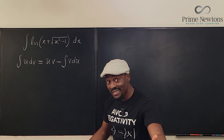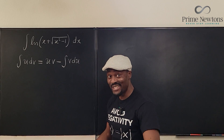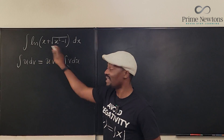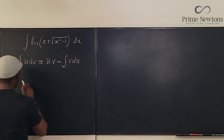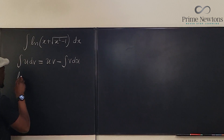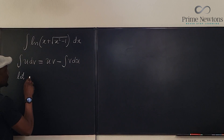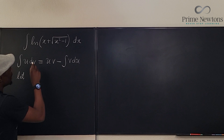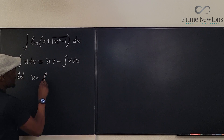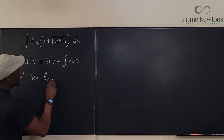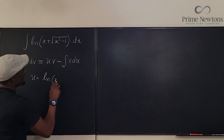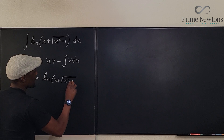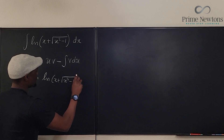So like we agreed, we're going to take u to be the natural log function that's sitting here. So we say: let u be equal to ln of x plus the square root of x squared minus 1.